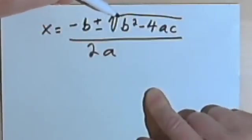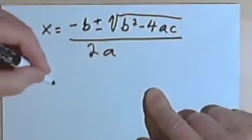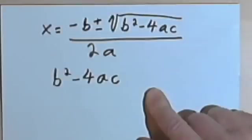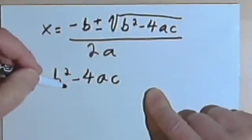Okay, well, the part under the radical sign, b squared minus 4ac, is the discriminant. So let's remember what b squared minus 4ac means.